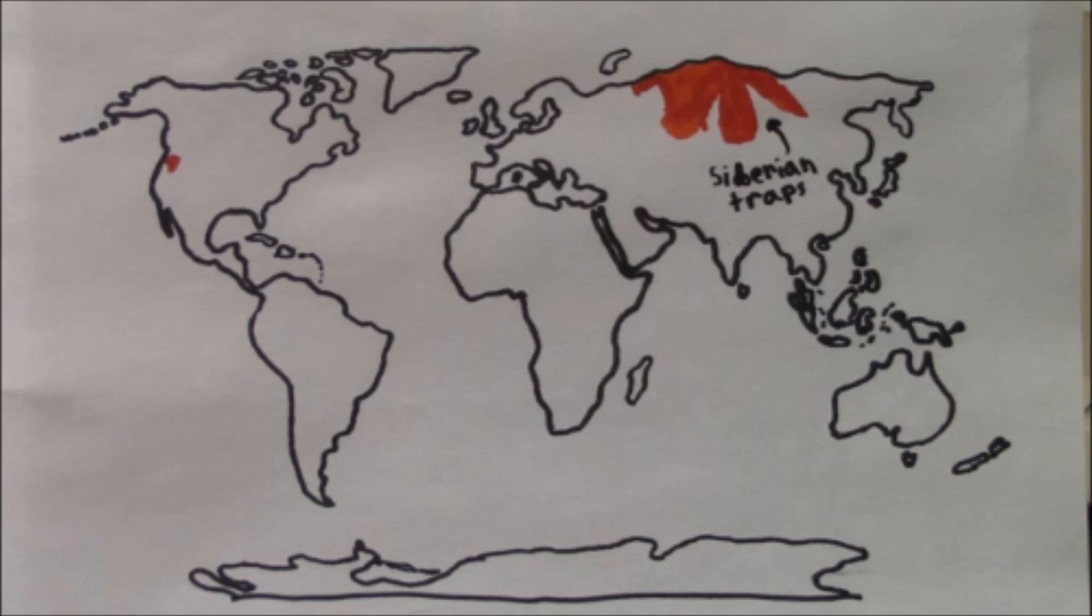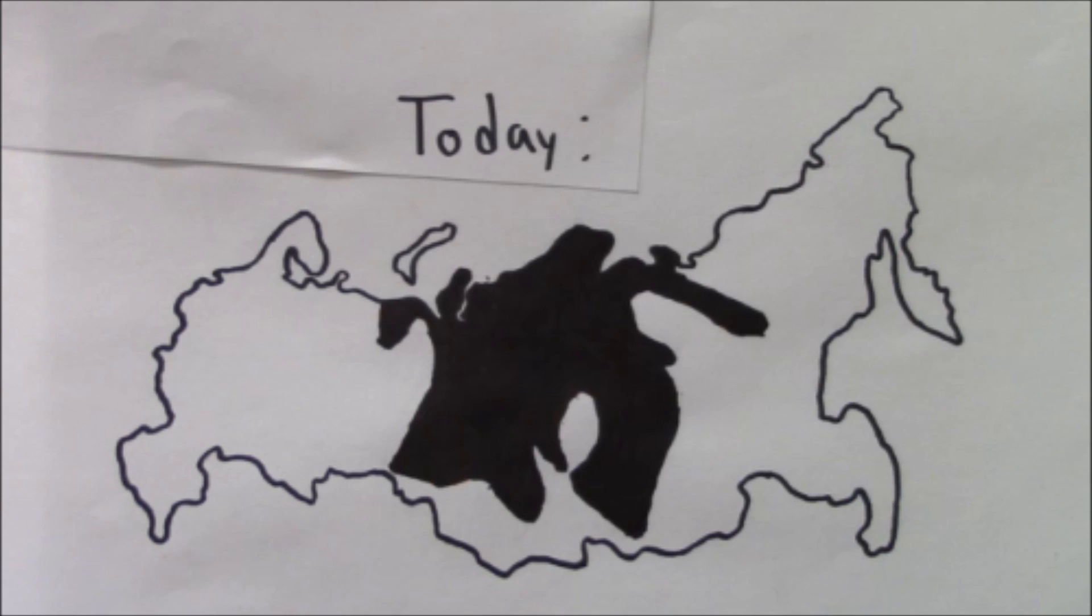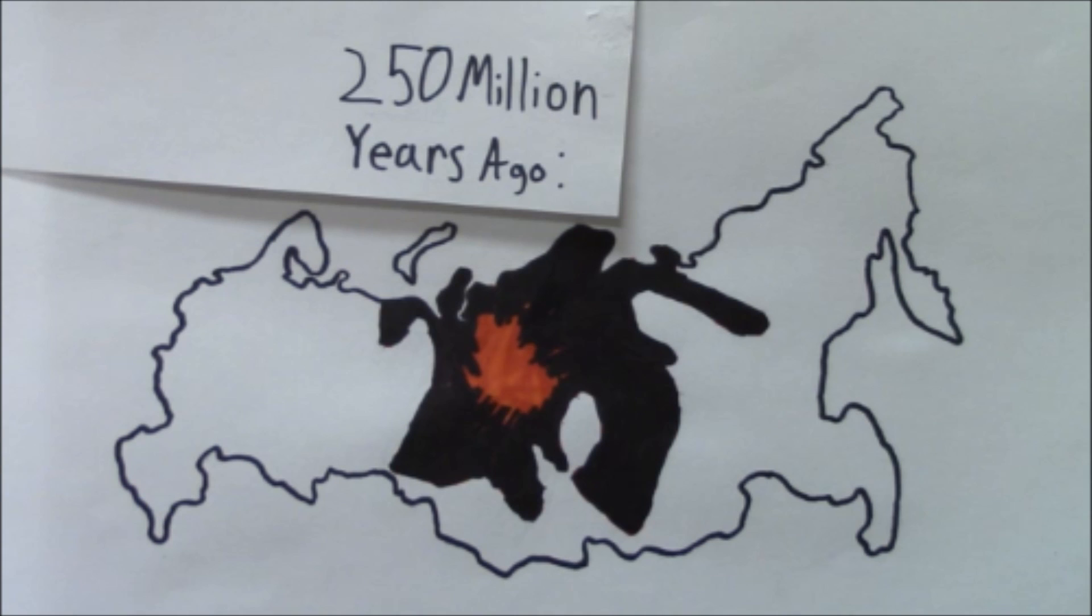The term Siberian Traps refers to a massive basalt plain, which today covers about 2 million square kilometers in northern Russia. But 250 million years ago, it was the largest volcano that we know of.